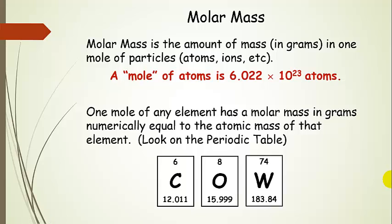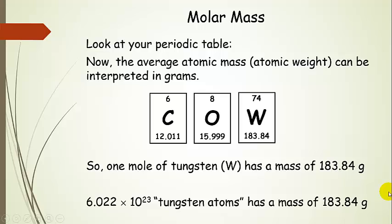All of those elements in the periodic table: if you have Avogadro's number of them, they are going to have the mass shown on the periodic table in grams. We can interpret that in grams, which makes our life a lot easier because we can measure grams. So one mole of tungsten — if we weigh out one mole — we would weigh out 183.84 grams, and we could be confident that we had 6.022 times 10 to the 23rd tungsten atoms. When we put that on the balance, we're going to get 183.84 grams.